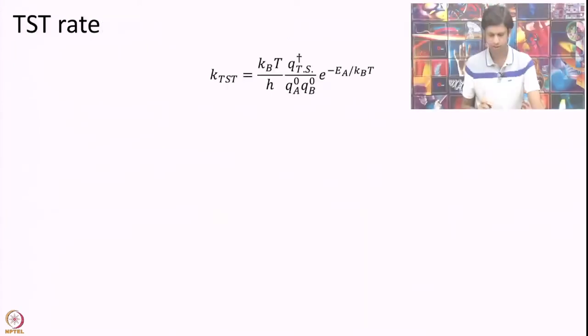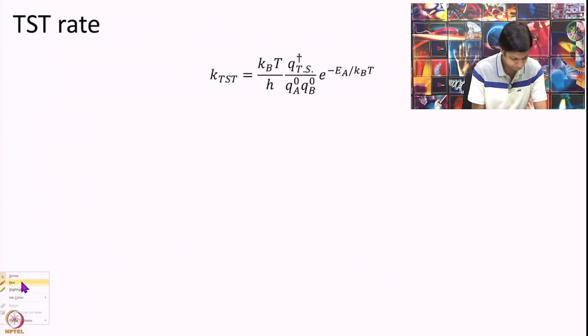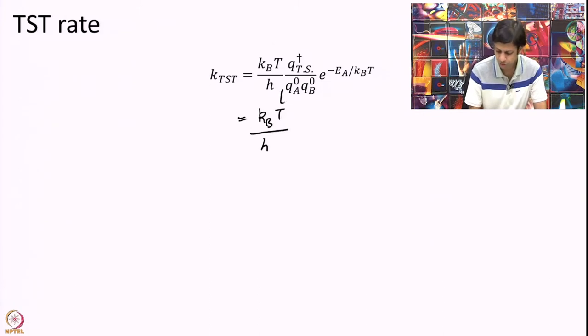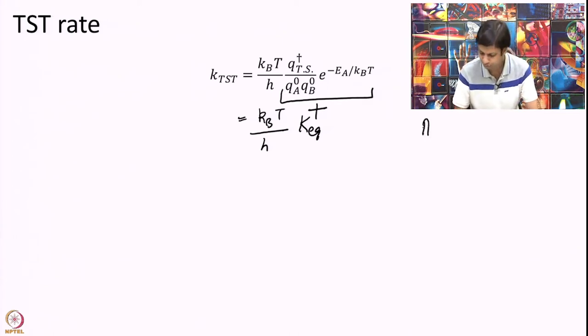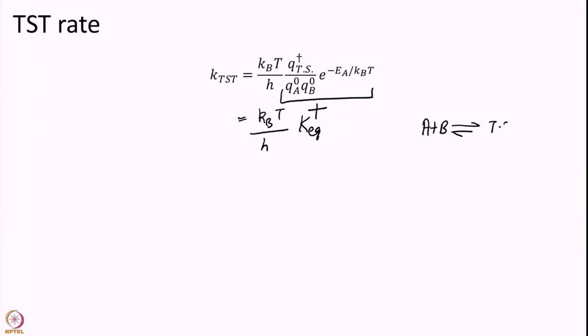So, let us look at our KTST relation that we have derived. Now, what I am going to say is this is equal to, this thing is nothing but K equilibrium of the transition state where this is nothing but A plus B in equilibrium with transition state. Remember this is how we actually started. So, this has to be true.